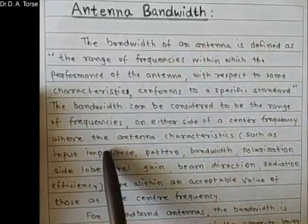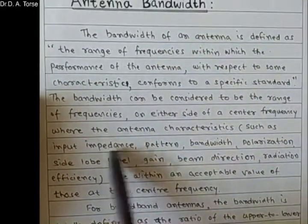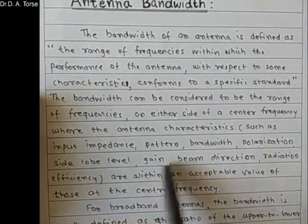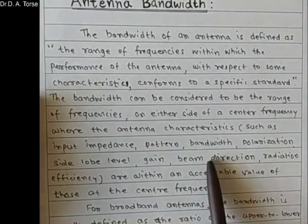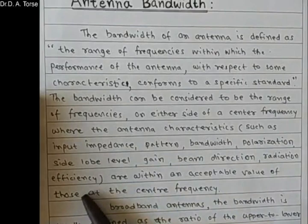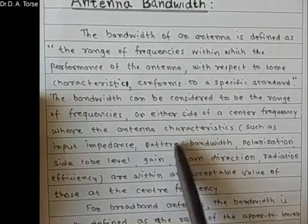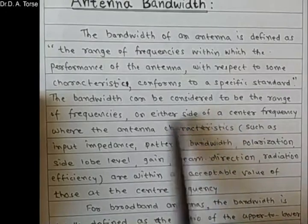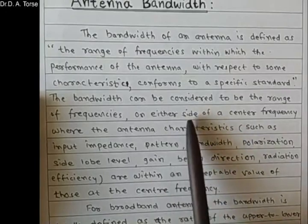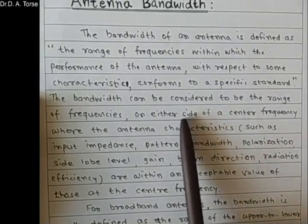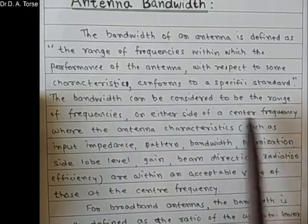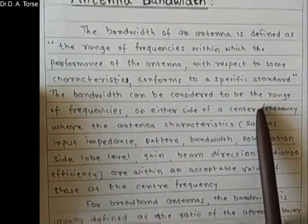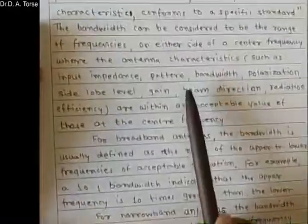There are various parameters we have learned till now, such as impedance, polarization, side lobes, gain, beam, beam direction or beam area, and radiation efficiency. When all these parameters are within some acceptable level in the range of frequencies — from the lower frequency FL to the higher frequency FH around the center frequency F0 — it is called the antenna bandwidth.